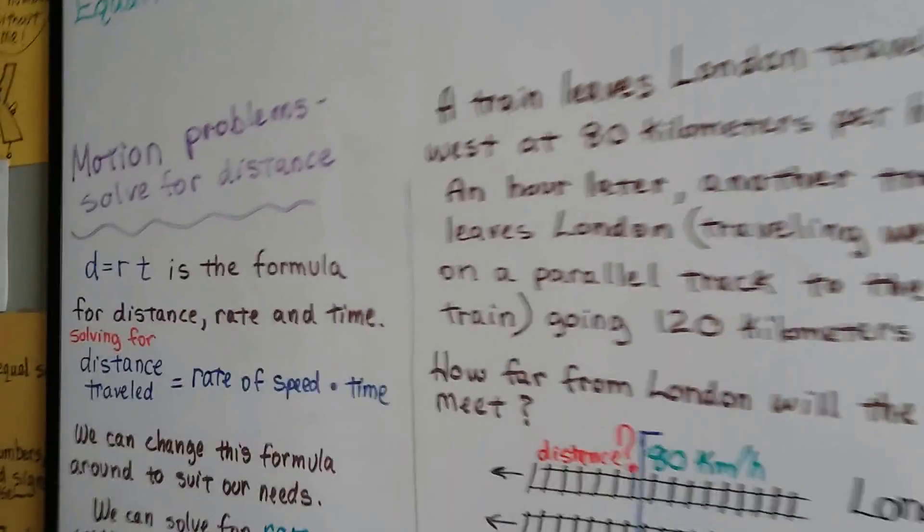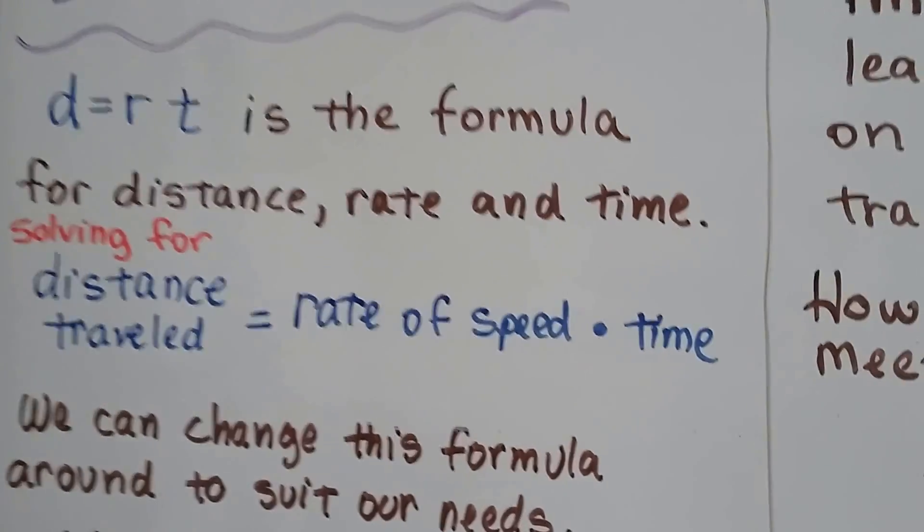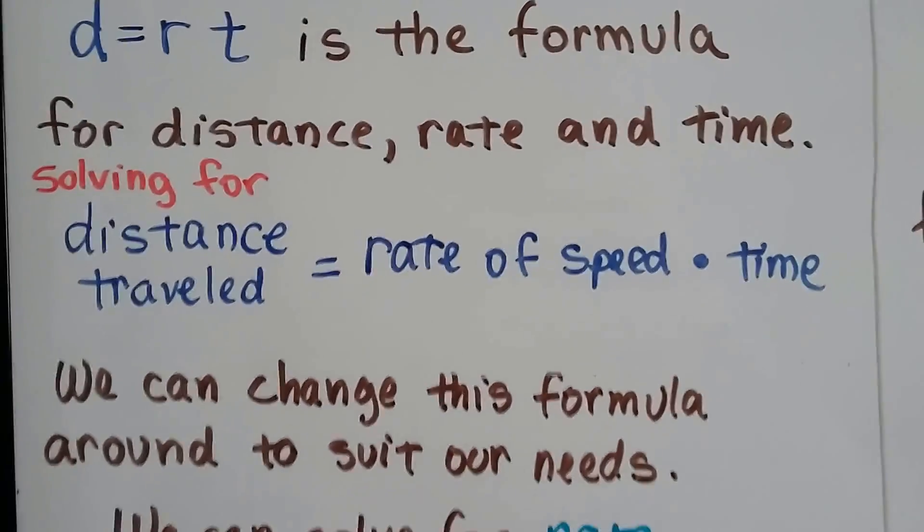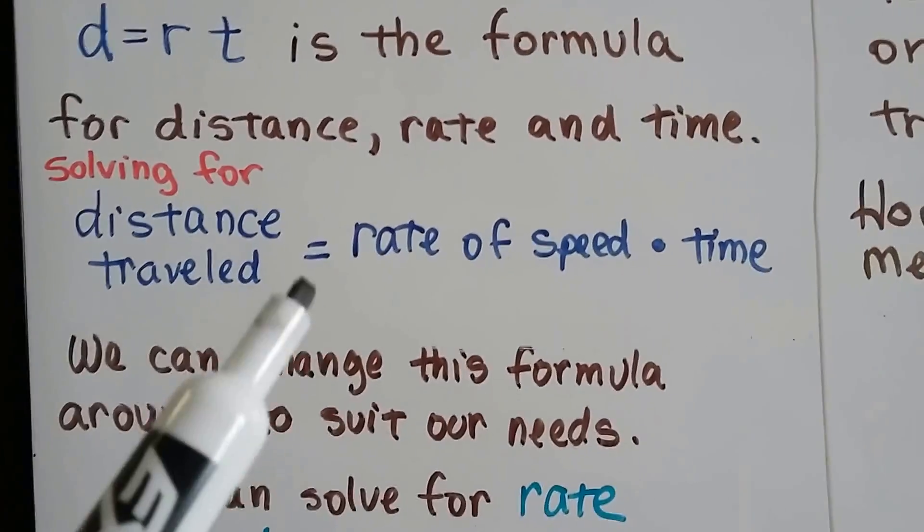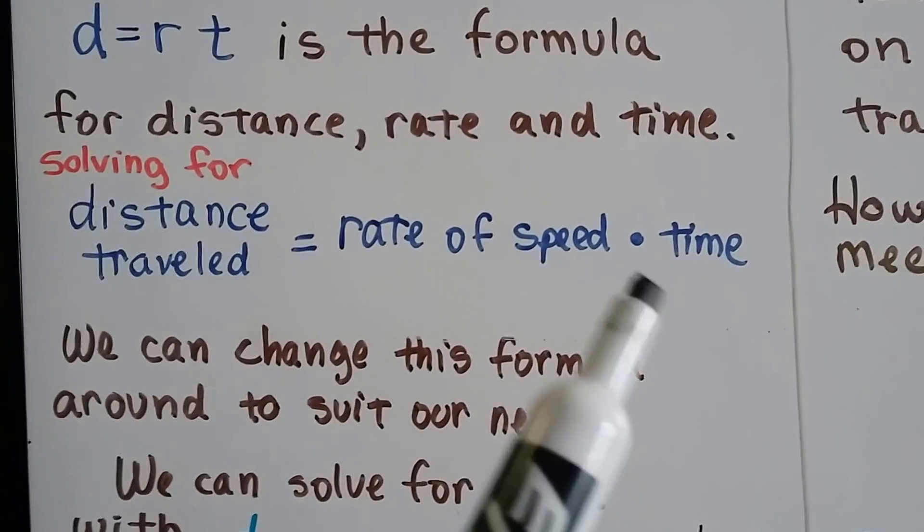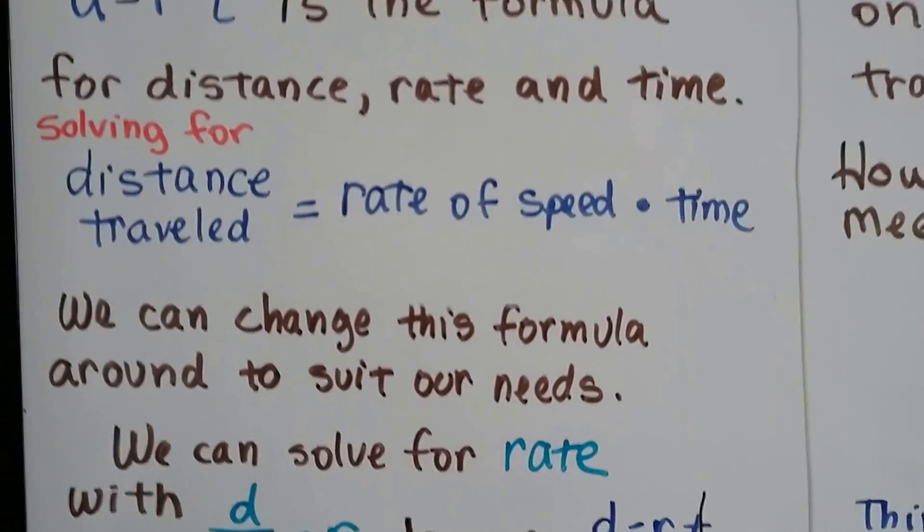d equals rt is the formula for distance, rate, and time. The distance traveled equals the rate of speed that we went multiplied by the time it took us.